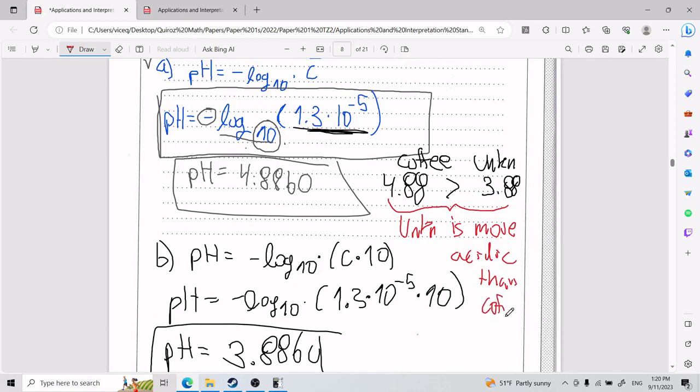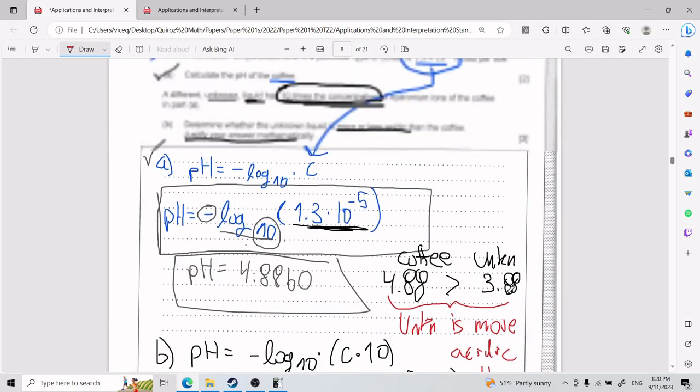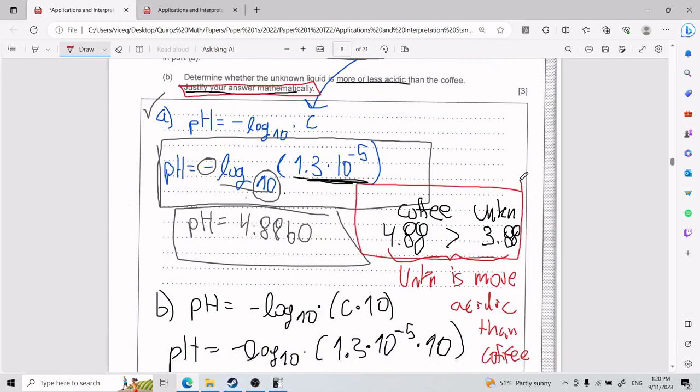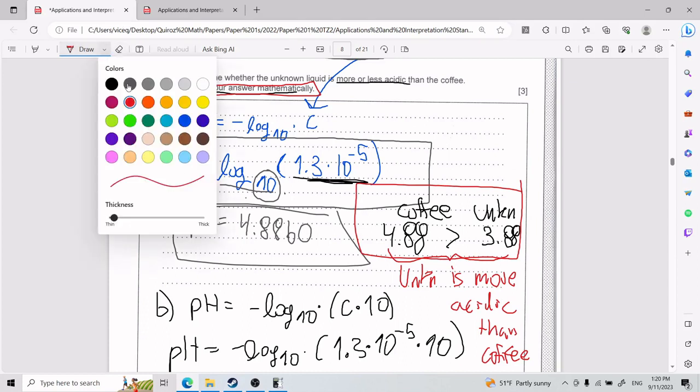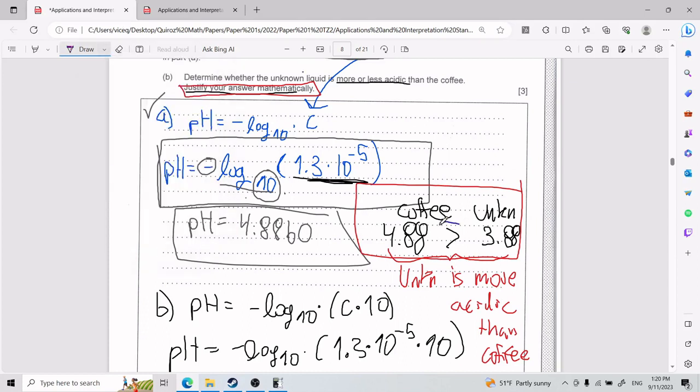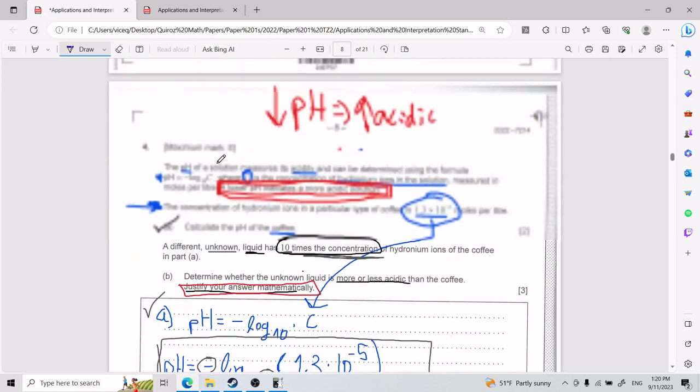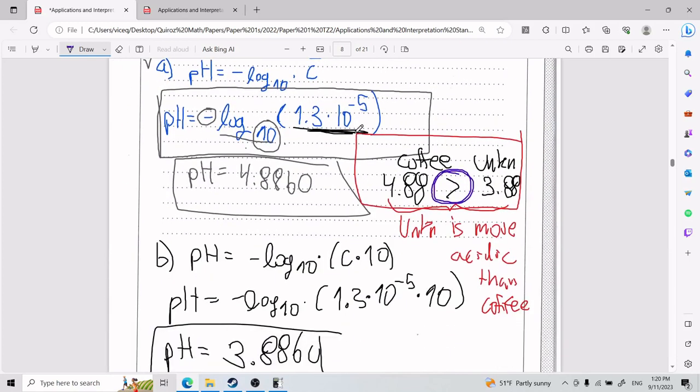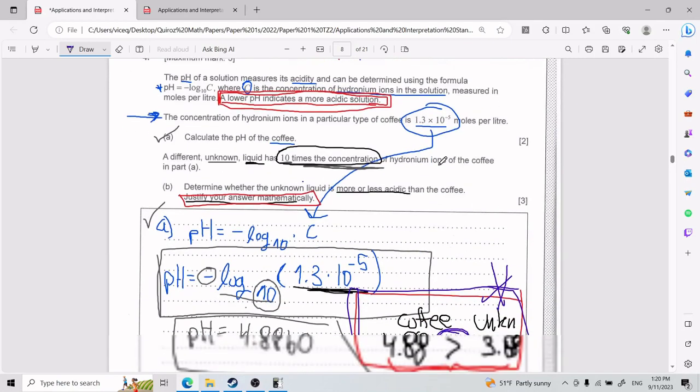And for those of you that are a little bit nervous on how do you justify that mathematically, this part here, right? One way you can do it is literally putting it like this. You're saying which number is bigger with this special sign. That right there is how you justify mathematically, by saying that 4.88 is greater than 3.88. Another way you can do it is simply graphing it and comparing it from there. But I think this right here is way more intuitive. But anyways, that is how you solve number 4.